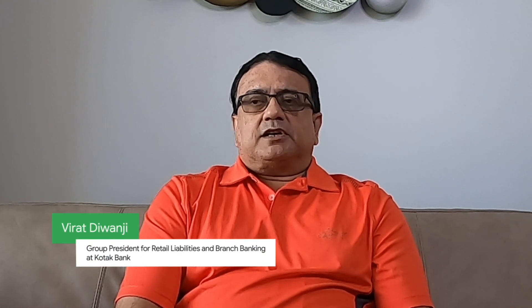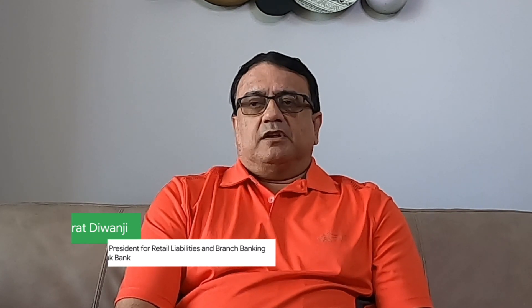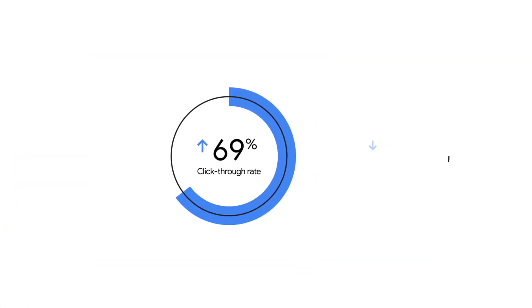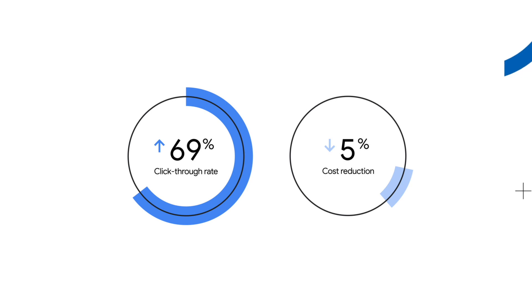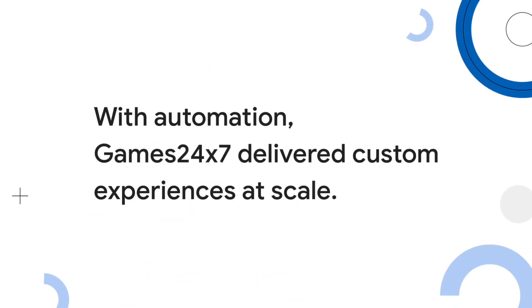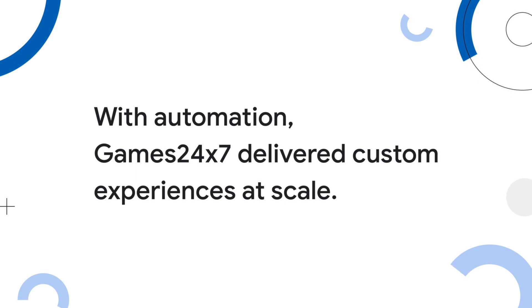We didn't stop at simply translating English ads into Hindi. We started bringing in contextual references as well, and there we saw people being more engaged with the products and offers we were making. We found that click-through rates went up by 69% with a 5% cost reduction. At the scale at which we operate — one India but many Indias — it's sometimes just not possible to do this manually.